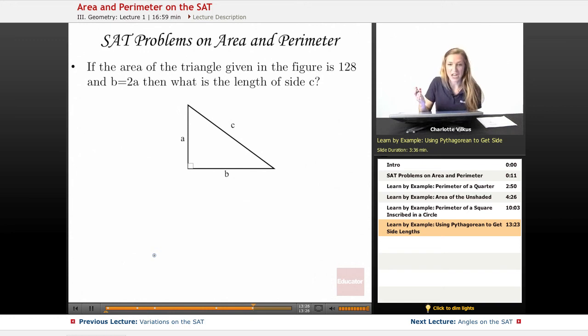Here we have just one shape, so no more two shapes, but one shape, and we're looking for the length of side C. We're given that the area of the triangle is 128, and B is equal to 2A.